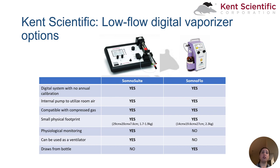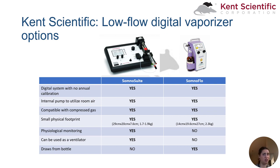We offer two systems: the SomnoSuite and the SomnoFlow. Both are digital systems with no calibration required, can utilize either room air or compressed gas, and have a small physical footprint. However, the SomnoSuite includes physiological monitoring and can also be used as a ventilator if needed, but requires a syringe mechanism to fill. The SomnoFlow can draw anesthetic straight from the bottle. So, it's your fancy Lamborghini versus your 2014 Toyota Corolla — both will get you where you want, but you might need the Lamborghini sometimes.